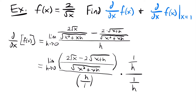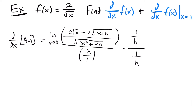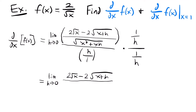After multiplying by (1/h)/(1/h), the h in the denominator of the outer fraction cancels to 1. So now we have the limit as h approaches 0 of [2√x - 2√(x+h)] over [h times √(x² + xh)]. We still have h in the denominator, so we still have an indeterminate form and need more manipulation — specifically the rationalizing method using the conjugate.